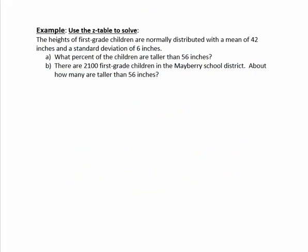Example. Use the z-table to solve. The heights of first grade children are normally distributed with a mean of 42 inches and a standard deviation of 6 inches.